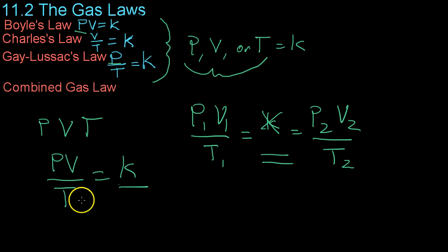One thing you may have already noticed is that if you hold one of these constant, you end up with one of the initial laws that we started with. For example, if you have a variable pressure and volume but keep the temperature constant, that is, it could come over here and be part of this K, then you would just end up with pressure and volume equals some different K. So let's say this is K1 and this is K2. But if you hold one of the variables constant, you end up with either Boyle's Law, Charles's Law, or Gay-Lussac's Law, depending on which variable you decide to keep constant.